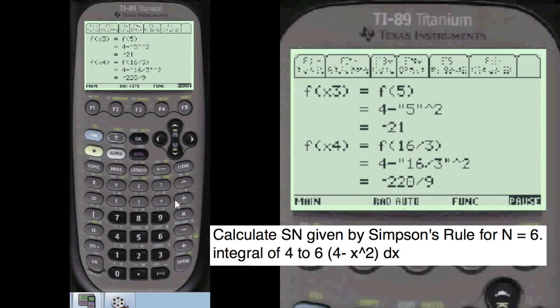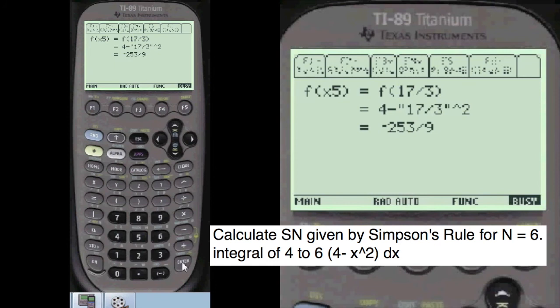Minus 21. Minus 220 over 9. Minus 253 over 9. And then minus 32.